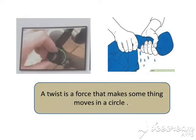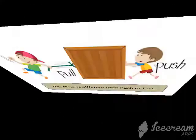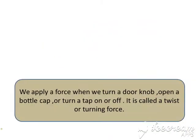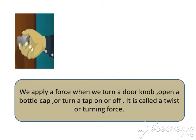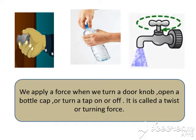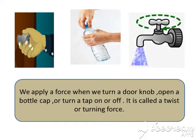A twist is a force that makes something move in a circle. This force is different from push or pull. We apply a force when we turn a doorknob, open a bottle cap, or turn a tap on or off. It is called a twist or turning force.